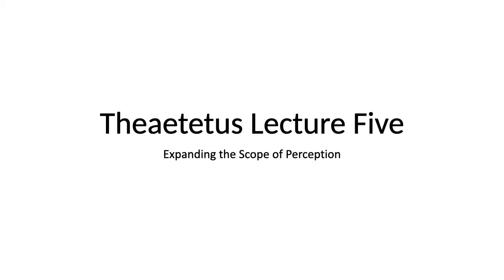Hello, and welcome to Theaetetus Lecture 5. We are going to be talking about the initial criticisms of Theaetetus' theory that knowledge is perception in this lecture, as well as going over in more depth what the question is that has been asked. In particular, we are going to focus on the ways in which the idea of perception at issue in Theaetetus' account of knowledge is expanded in scope in the section of text we're going to be looking at. The meaning of this word starts out fairly narrow, and it gets an expansion in scope as the discussion continues that makes it apply to more and more things. There's a certain tension in this, which Socrates is going to exploit.